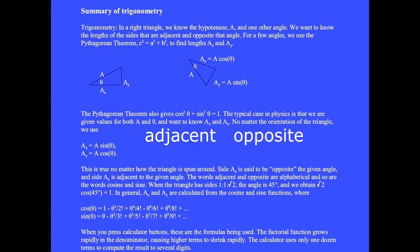The words adjacent and opposite are alphabetical and so are the words cosine and sine. When the triangle is spun around and I want to know the length of this side which is adjacent to the angle theta I use a cos(θ). When I want to know the length of this side which is opposite the given angle I use a sin(θ).